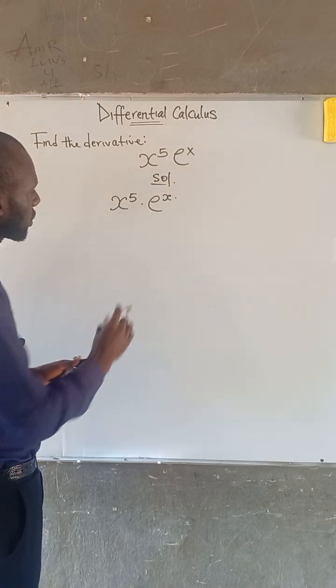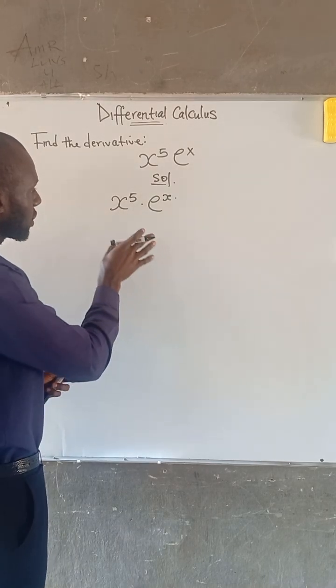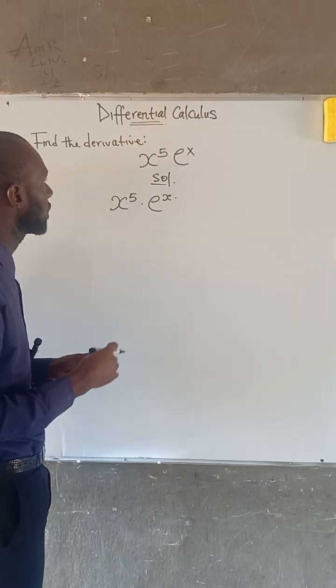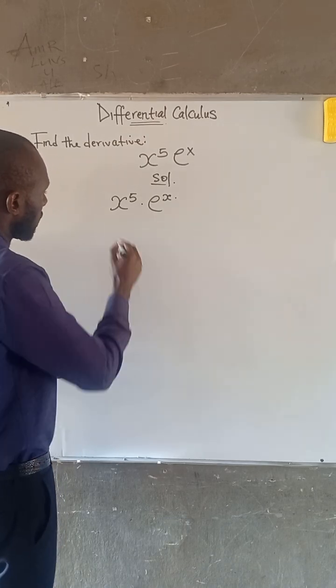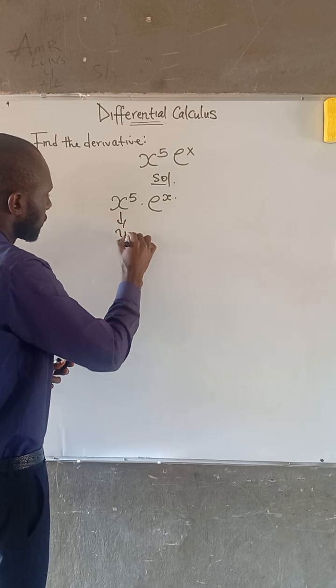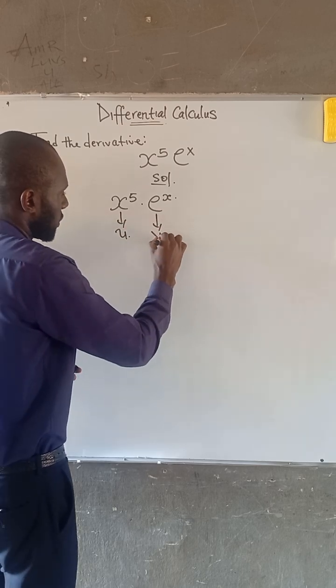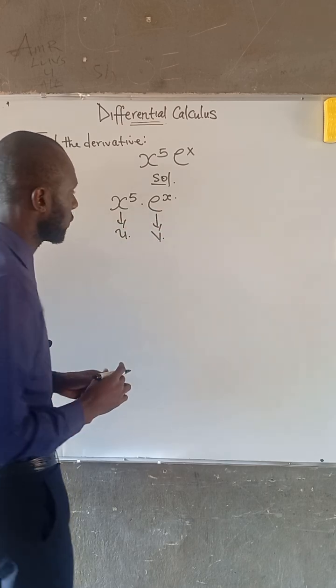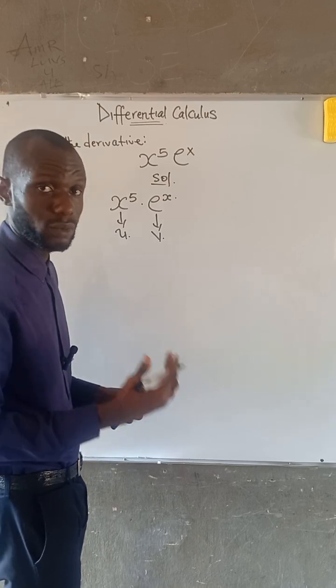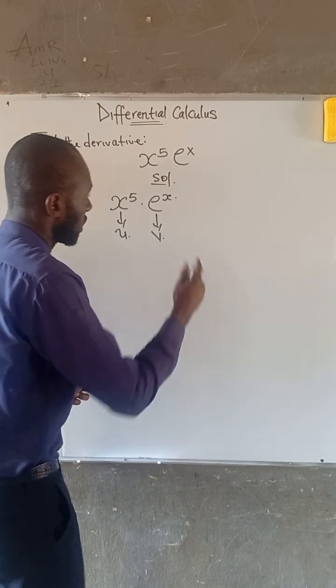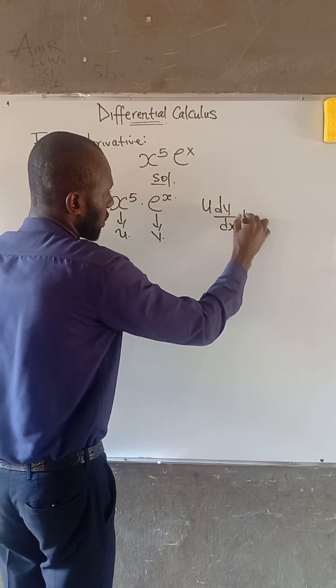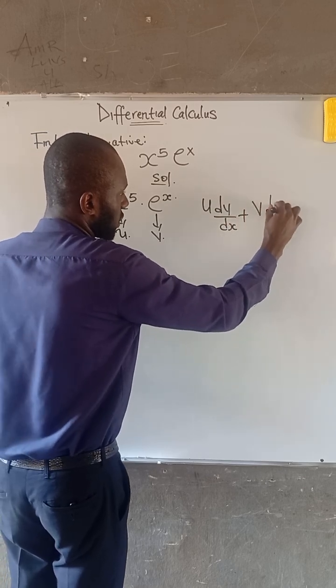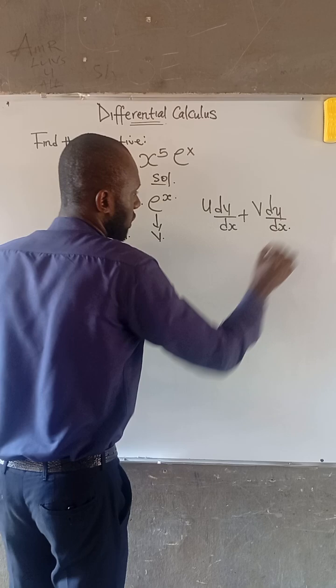So at this point, looking at this expression, it's obvious that we are going to find the solution using the product rule. So let's call here u and let's call here v. Therefore, we know that the formula for the product rule is giving us u times dv over dx plus v times du over dx.